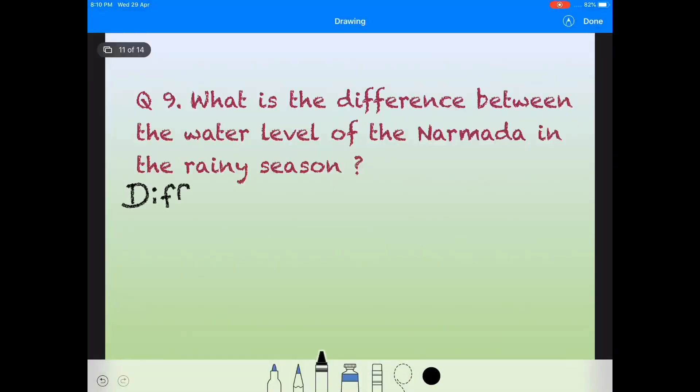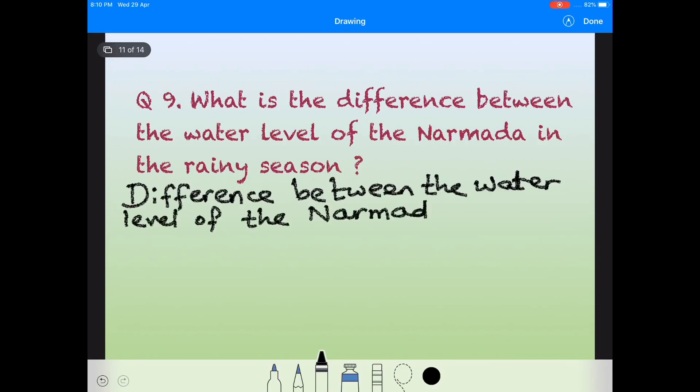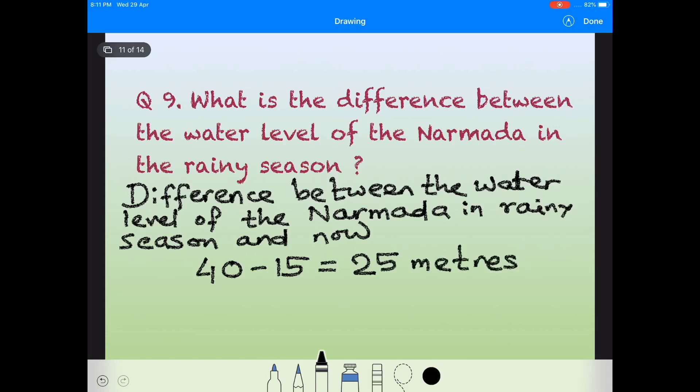So the difference between the water level of the Narmada in rainy season and now is equal to 40 minus 15, which equals 25 meters. Hence, the water level difference between rainy season and now in the Narmada is 25 meters.